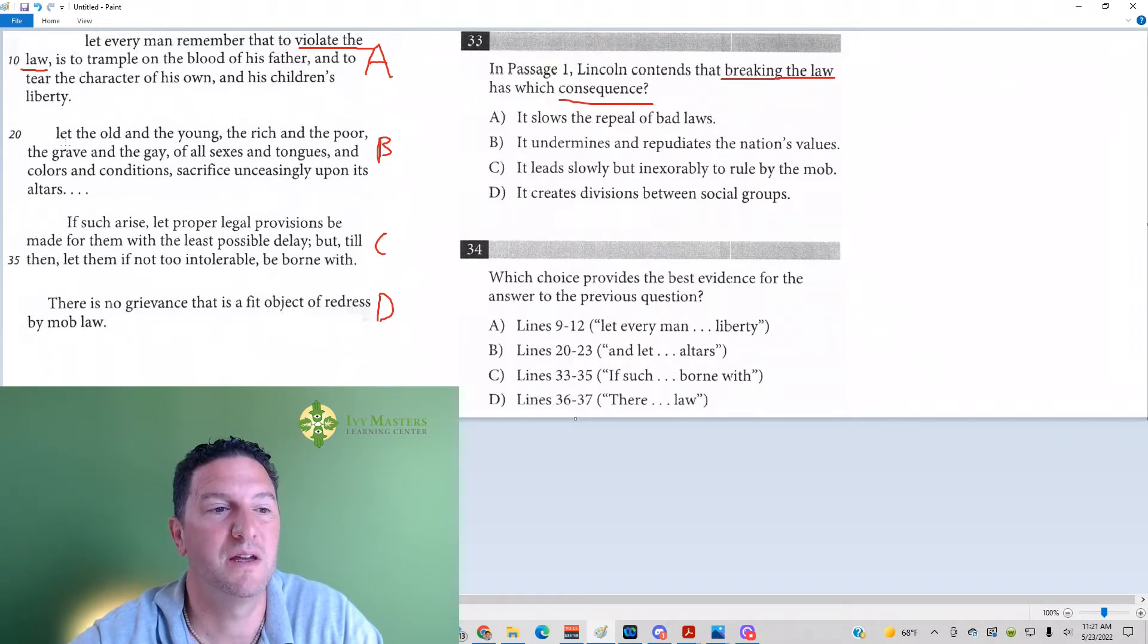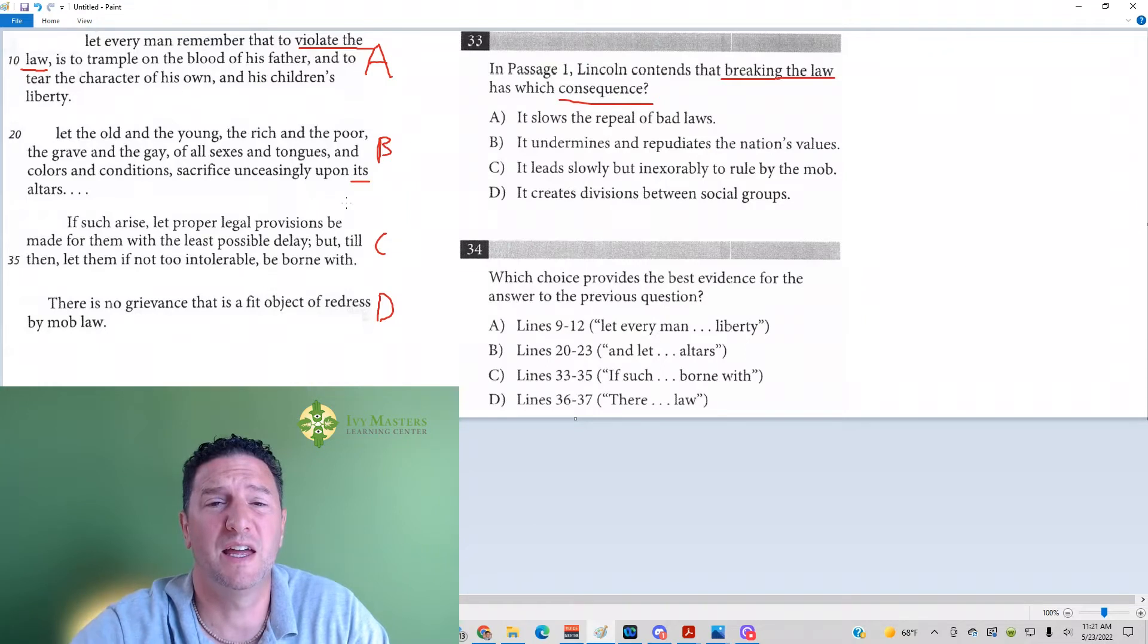Look at answer B. Let the old and the young, the rich and the poor, the grave and the gay, all sexes and tongues, all colors and conditions sacrifice unceasingly upon its altars. Now, great that this is a line reference question, but here we see the word it. What is it referring to? It's referring to the law. And Lincoln is just emphasizing how seriously we should take it, that we should follow the law, sacrifice unceasingly upon its altars. It's not talking about breaking the law per se. Looks like it's not going to be answer choice B for number 34.